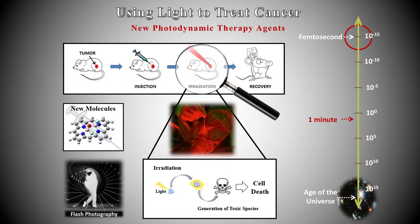The principle is simple. Use a non-toxic compound that accumulates in certain tissue types, such as tumor cells. Radiate that tumor with light, which activates those molecules now present in it, and initiate a very specific cascade of events which will produce toxic compounds.